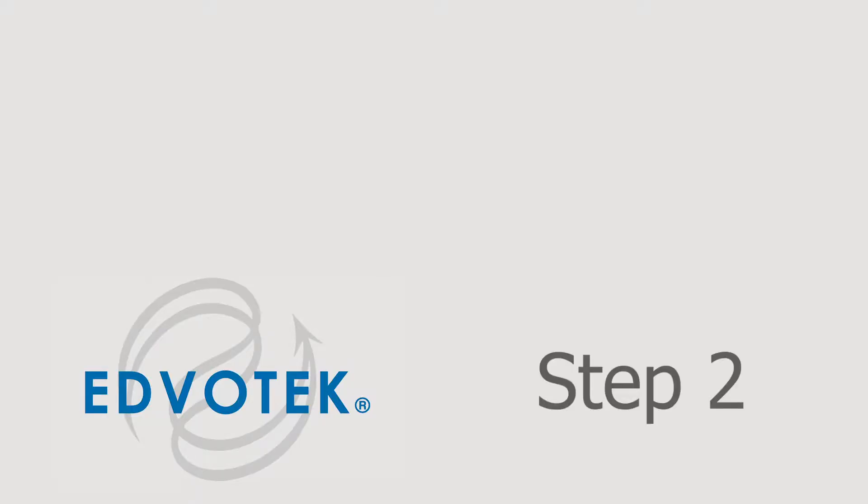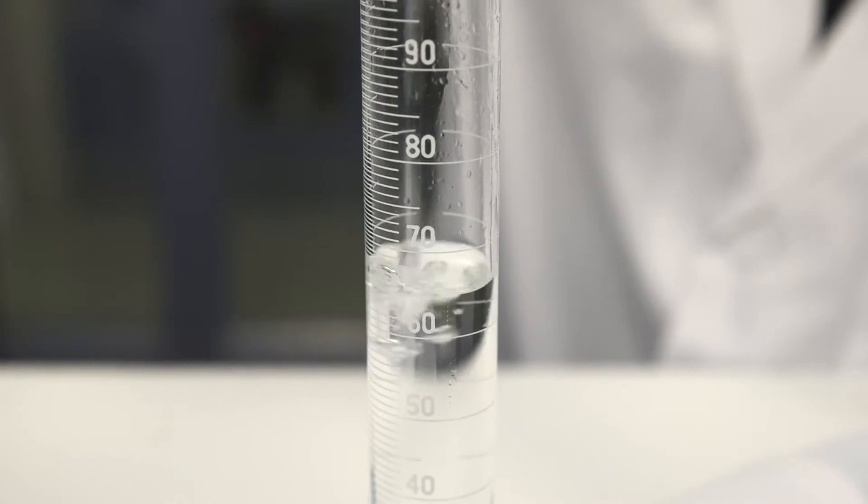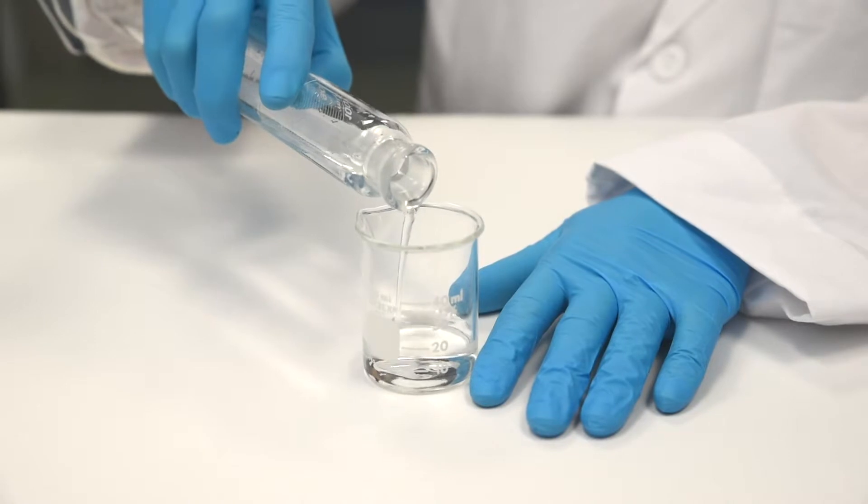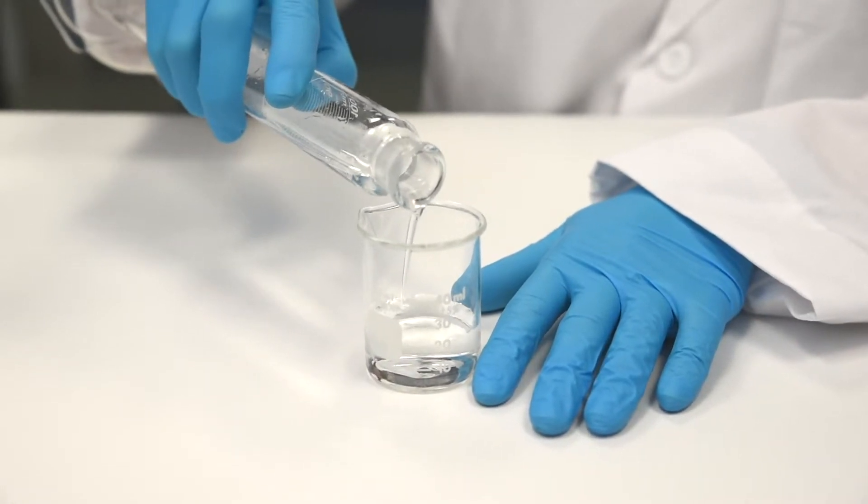Step 2: Save 70ml of the diluted Column Illusion Buffer for the preparation of the Molecular Sieve Matrix. Dispense the remaining buffer for the 10 student groups, 25ml per group.